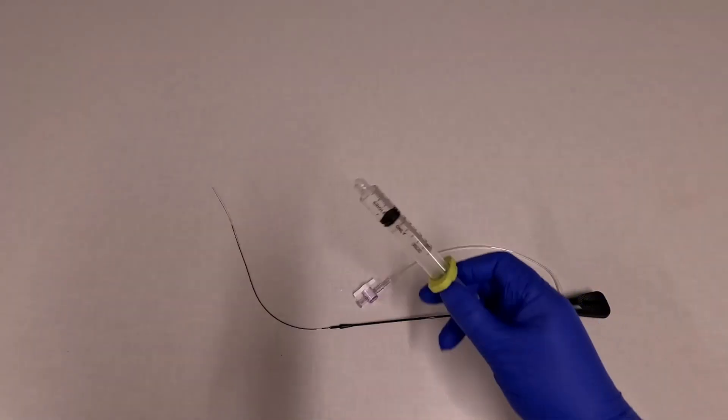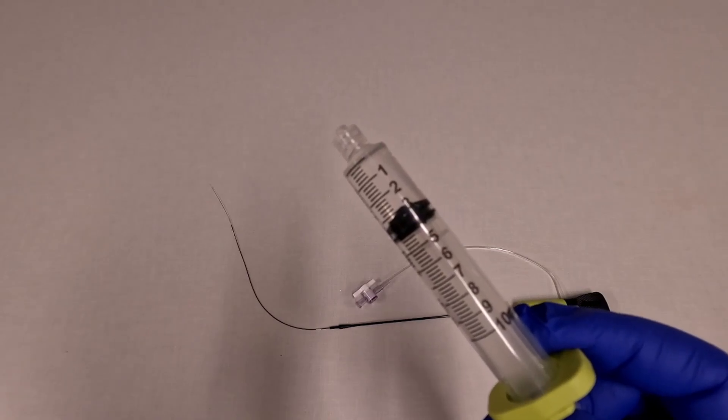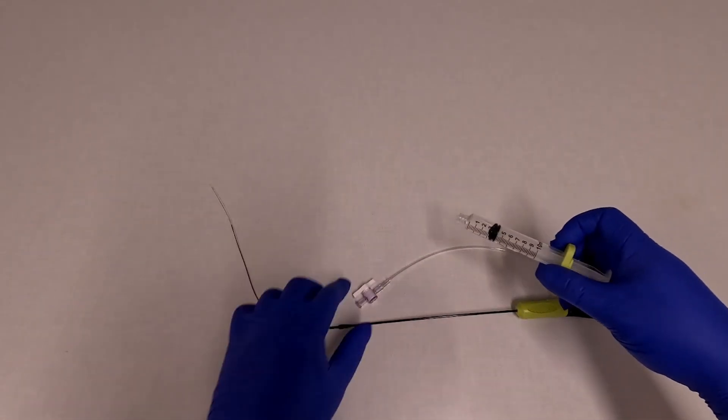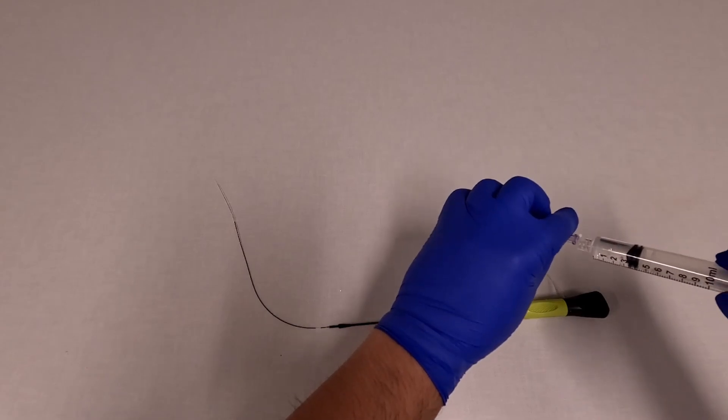To get prepared, you want to fill the syringe with about 3 cc's of saline or contrast, and then you're going to hook it up to the back portion of the device.